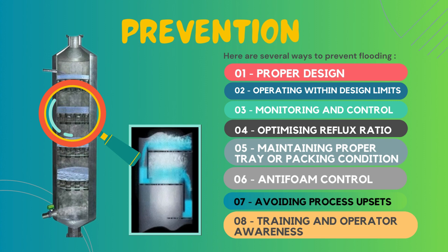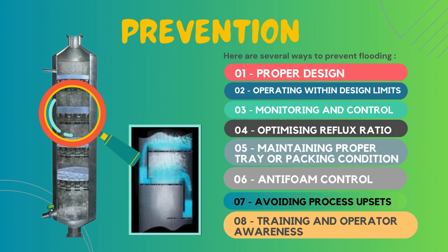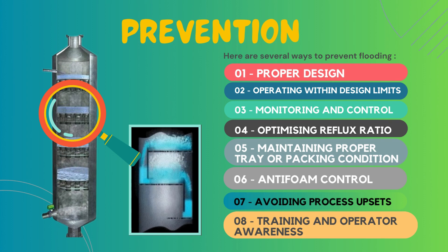The seventh parameter is to avoid process upsets. We should minimize process upsets and disturbances that can lead to sudden changes in liquid or vapor flow rates, temperature, or pressure within the column. Implementing safeguards and backup systems helps mitigate the impact of process upsets and prevents flooding in the distillation column.